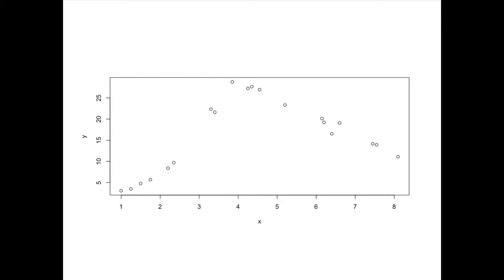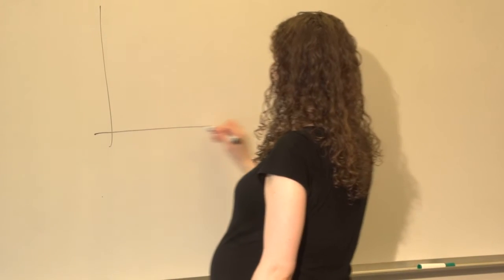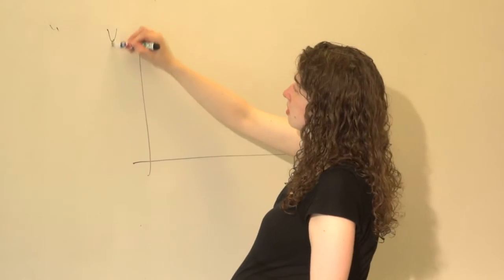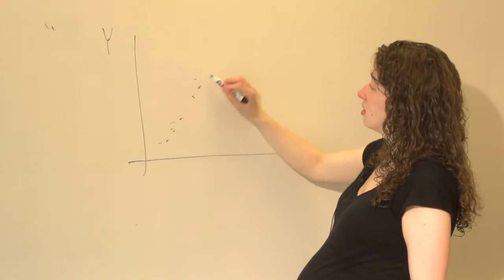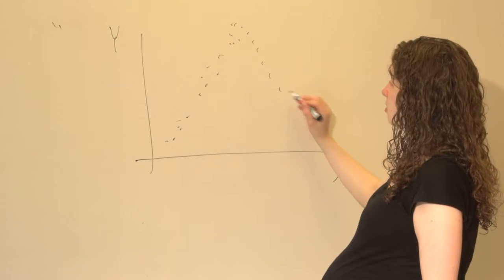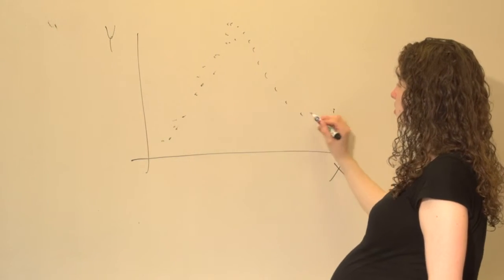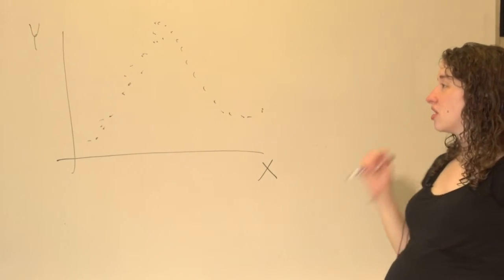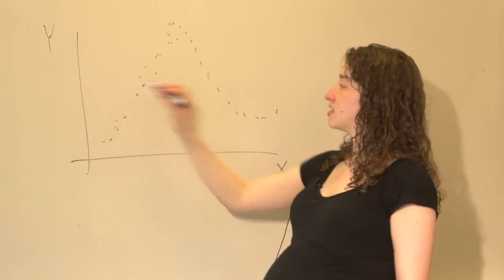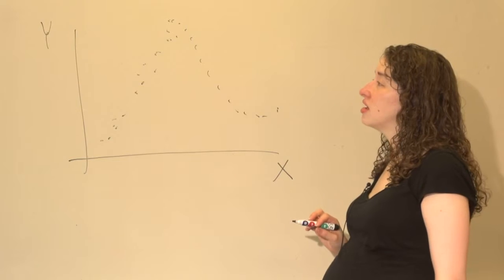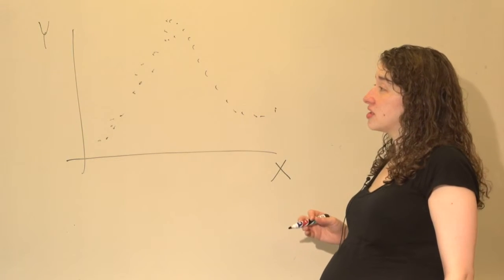I'm going to draw something on the board. Here's x, here's y, and here's essentially what that data looks like. If I just draw a line of best fit, it's going to go across like this — it's not going to give us very good predictions. So we can think of a couple other things to do.